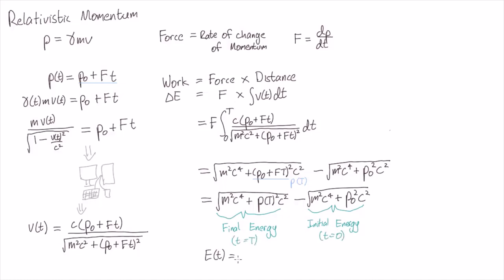This would give us the formula that the energy at time t is the square root of m squared c to the 4 plus p squared c squared. Or in other words, squaring both sides and leaving the time dependence of energy and momentum implicit, E squared equals m squared c to the power 4 plus p squared c squared.